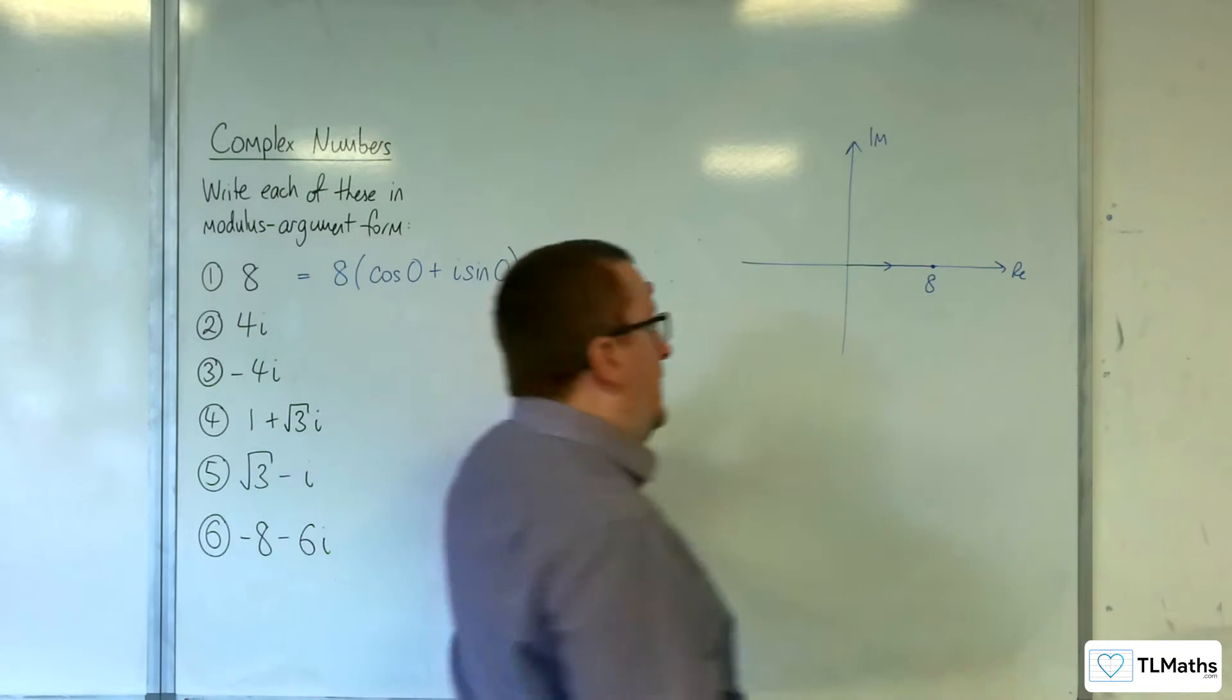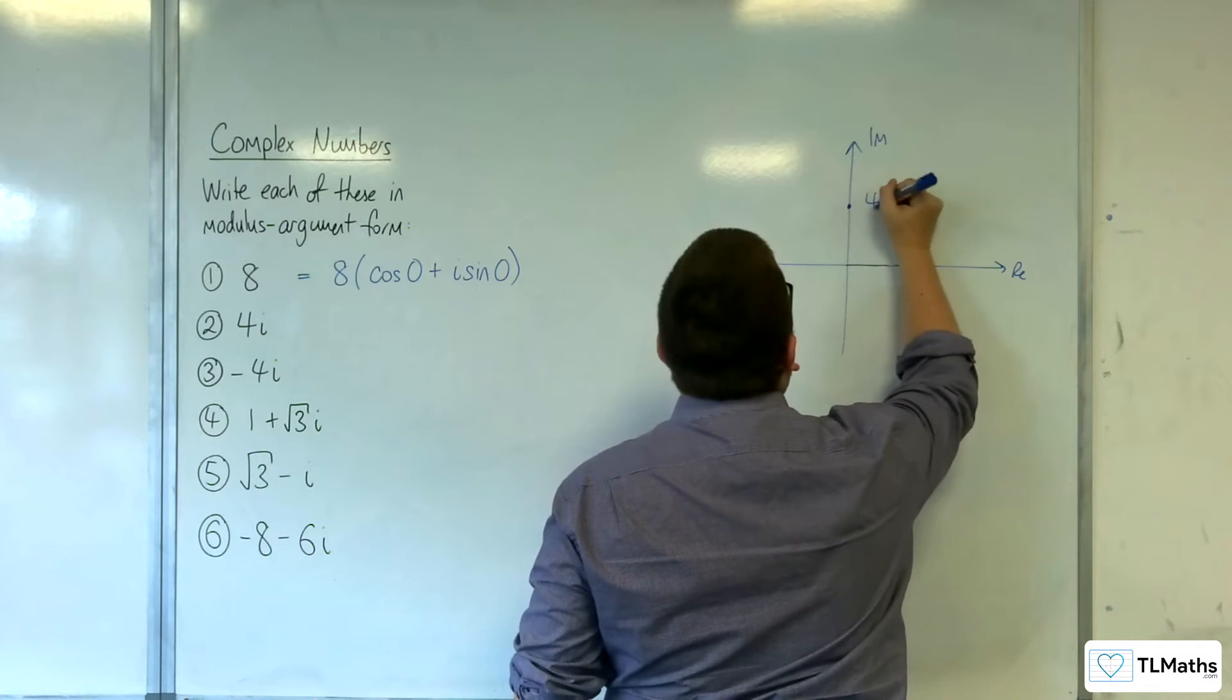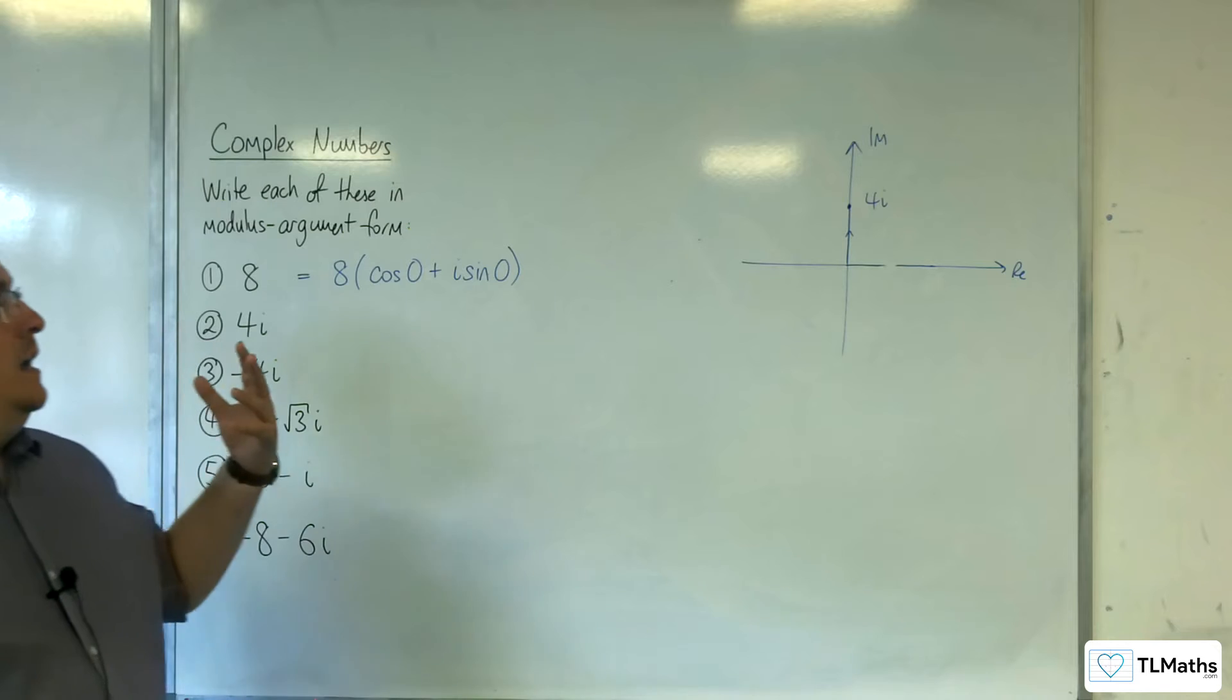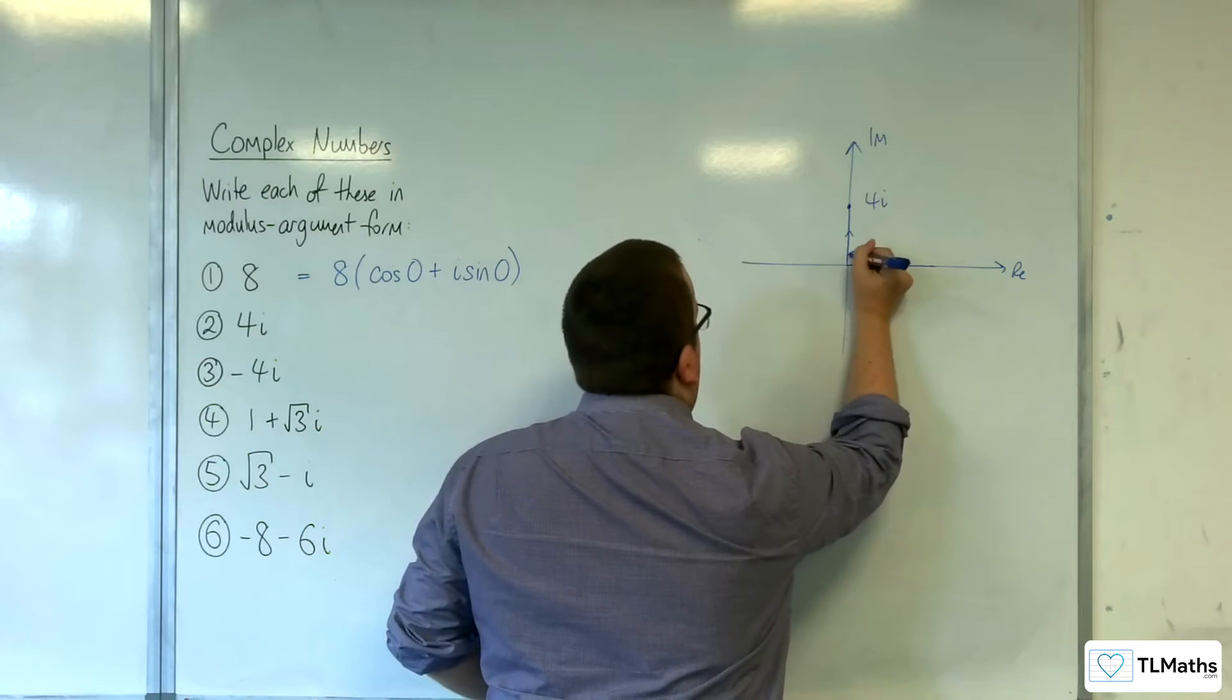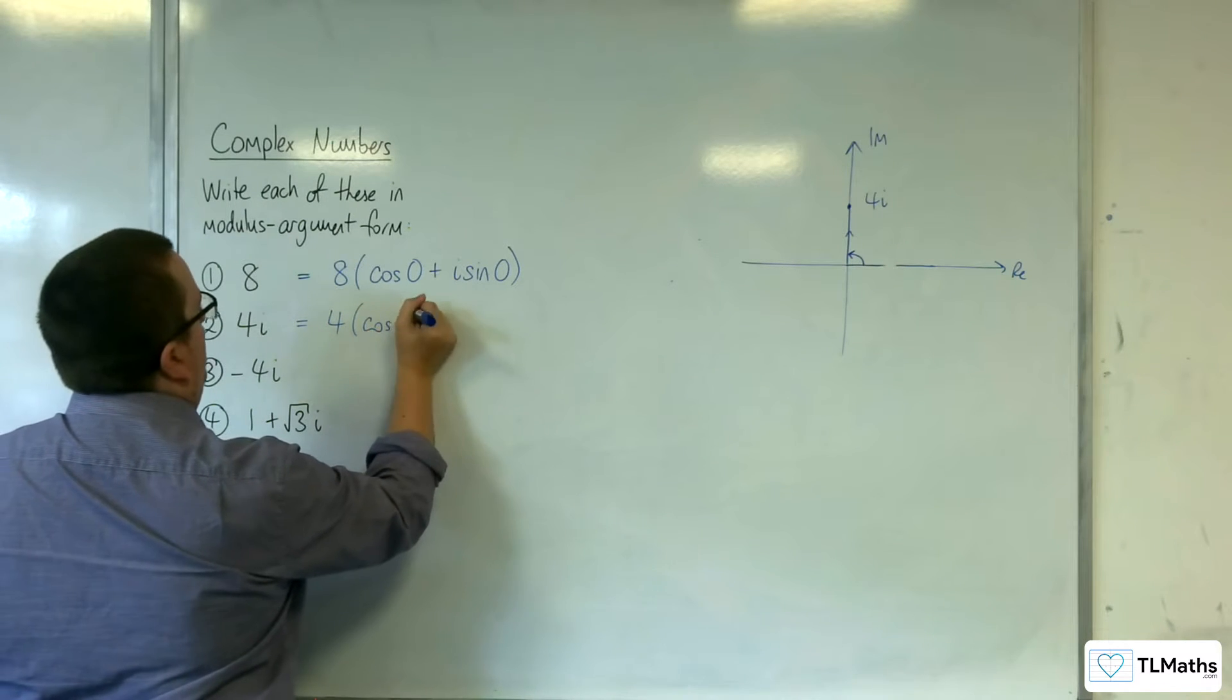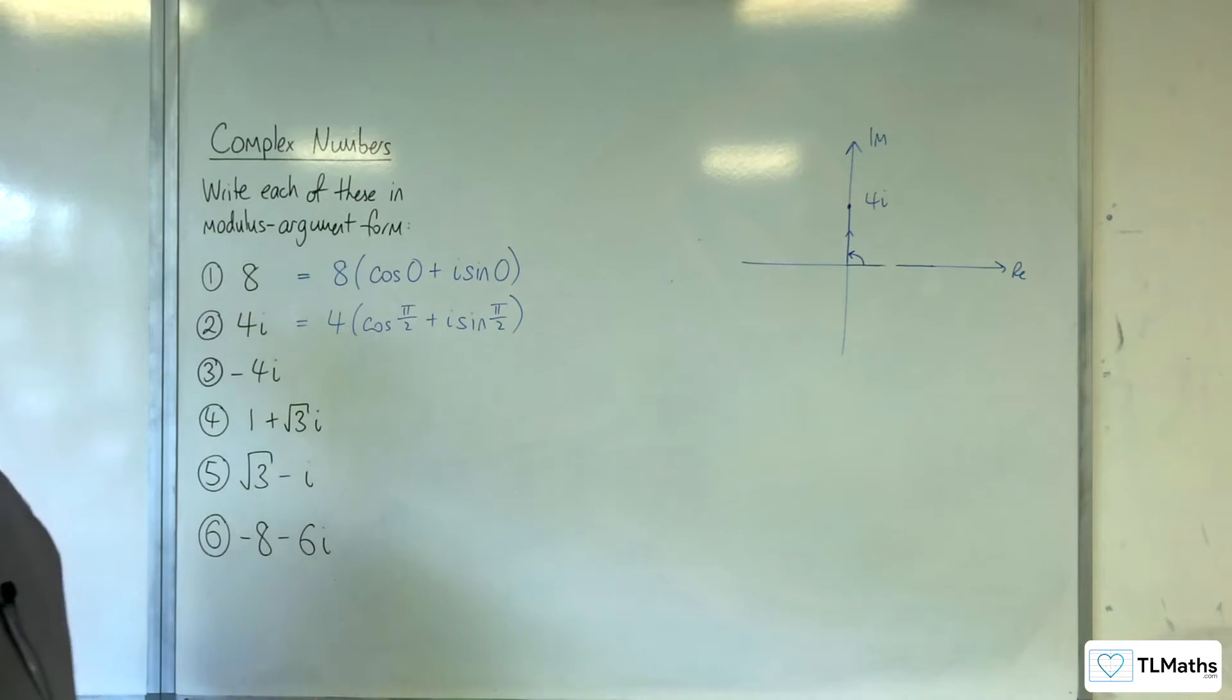Now, as for 4i, the modulus is 4. The argument here is going to be π over 2. So this would be 4 cosine π over 2 plus i sine π over 2, like that.